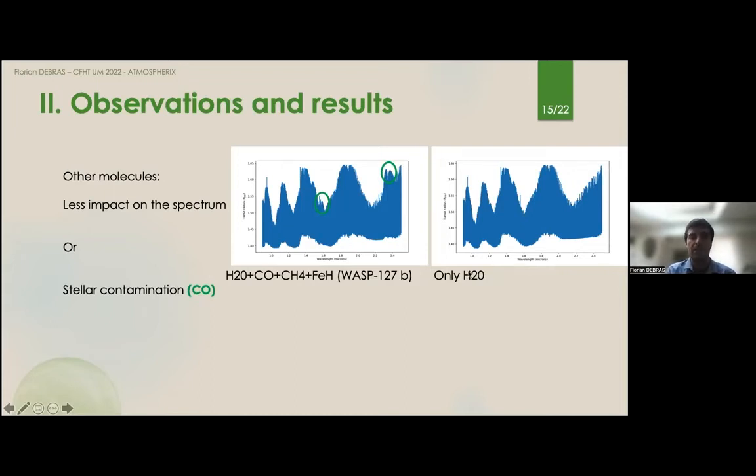Once we have performed this first step of detecting water, if we want to go a step further, we need two things. We need data-driven methods, like Monte Carlo algorithms, to explore the likelihood and so to have constraints and error bars on our detection. And we need to correct for stellar contamination, and notably for what we call the Rossiter-McLaughlin effect, so the fact that if there are some elements in the star and in the planet, the first one we will see will be the stellar elements.